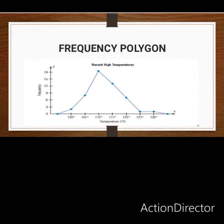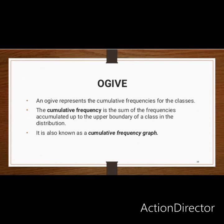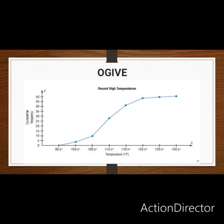The next method is the ogive. An ogive represents the cumulative frequencies for each class. To plot an ogive, you require cumulative frequencies and class boundaries. Whereas a histogram requires frequency and class boundaries, an ogive requires cumulative frequency and class boundaries. So the key difference is that ogive uses cumulative frequency while histogram uses just the frequency.